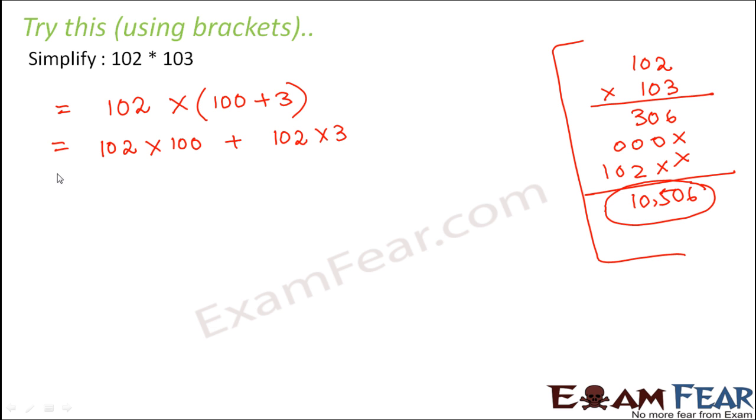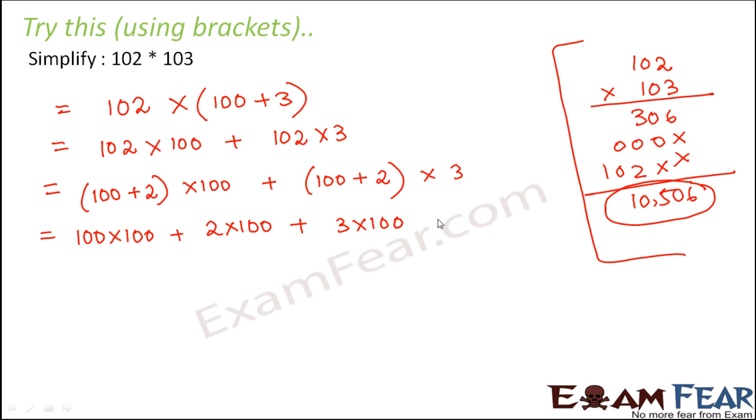So now this can be written as, this 102 can now be written as 100 plus 2 into 100 plus 100 plus 2 into 3. So now this can be written, why are we doing this? So that we have more hundreds everywhere. So when you have zeros, it becomes easy to multiply them. So this becomes 100 into 100 plus 2 into 100 plus 3 into 100 plus 2 into 3.